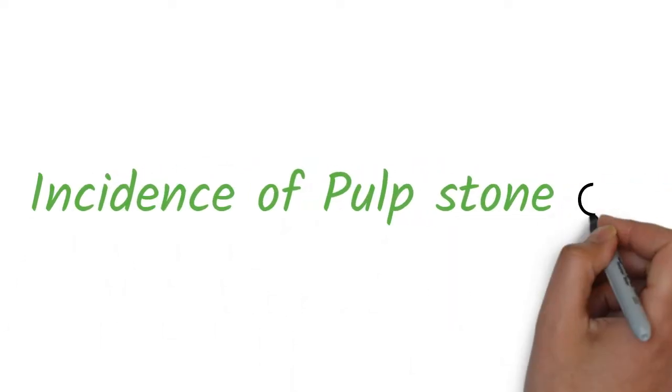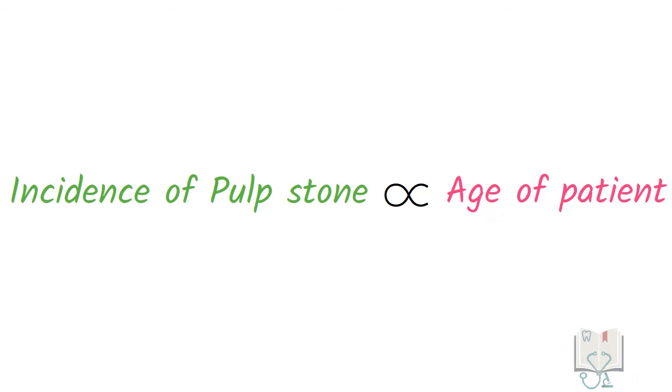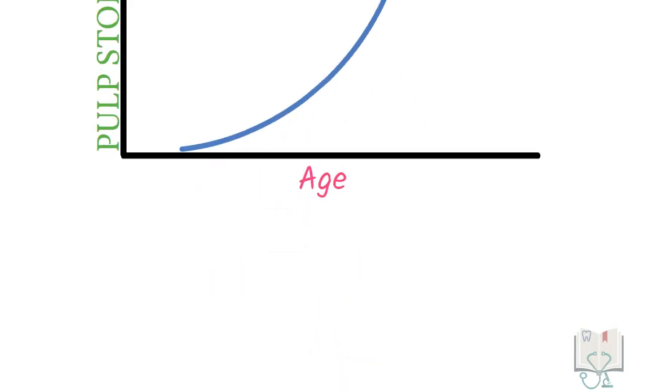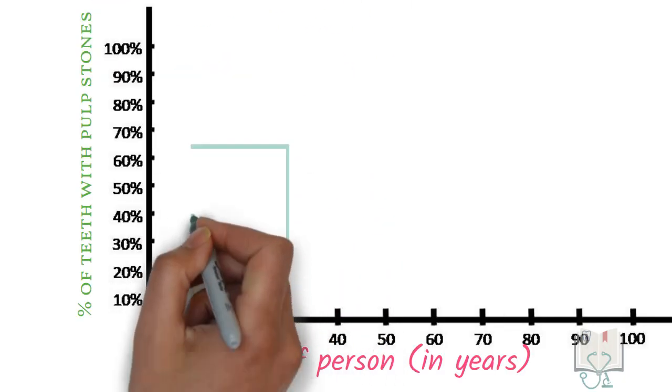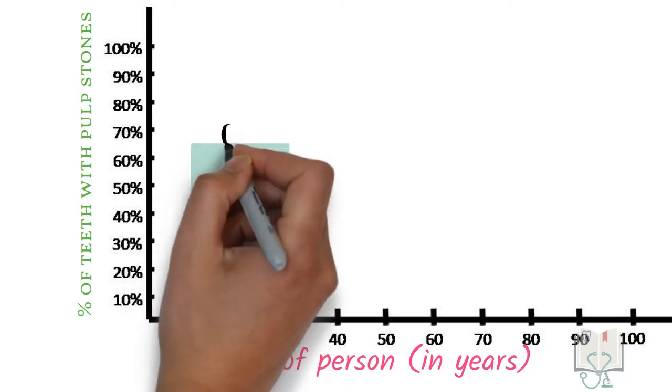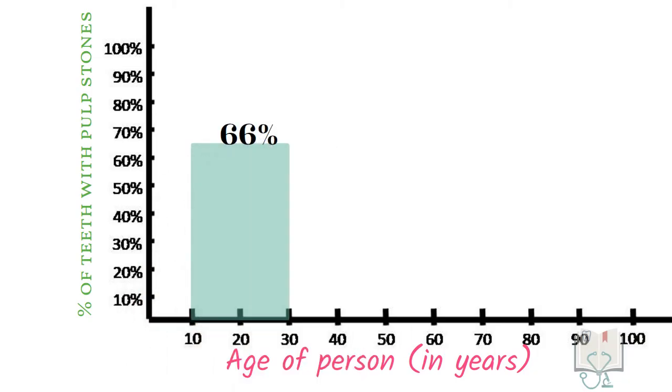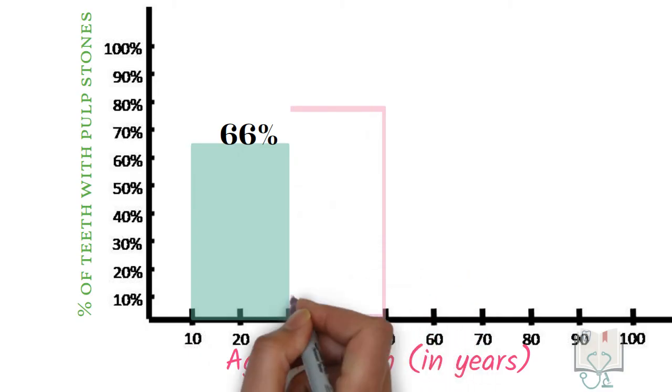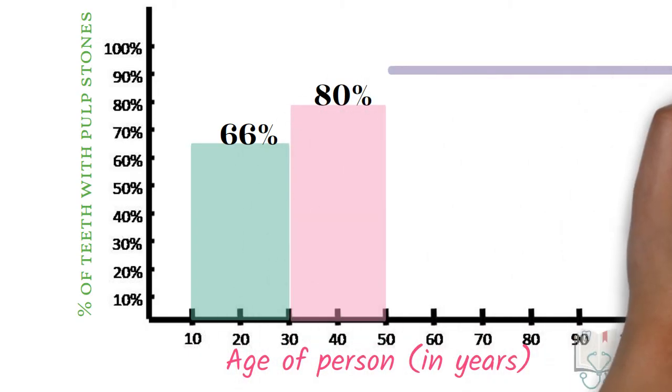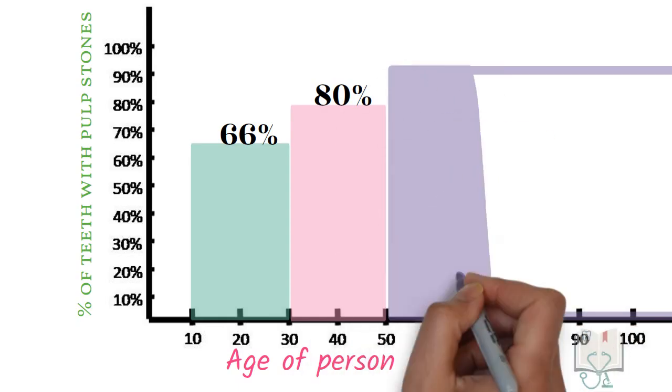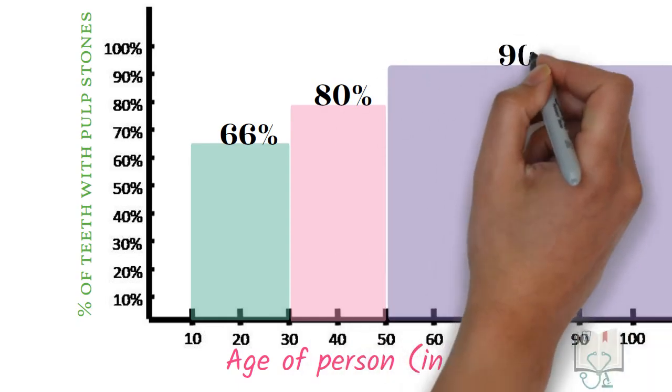Incidence: It is known that the incidence of pulp stones depends on the age of the patients, such that as the age of the patient increases, the number of pulp stones increase. According to some reports, a person between 10 to 30 years will have some calcification in 66% of teeth. A person between 30 to 50 years will have calcification in 80% of teeth, and a person over 50 years will have calcification in 90% of teeth.